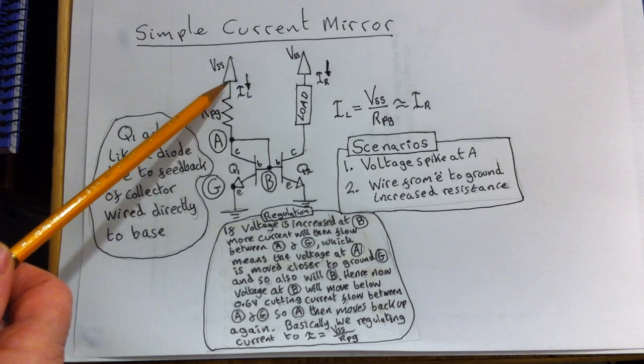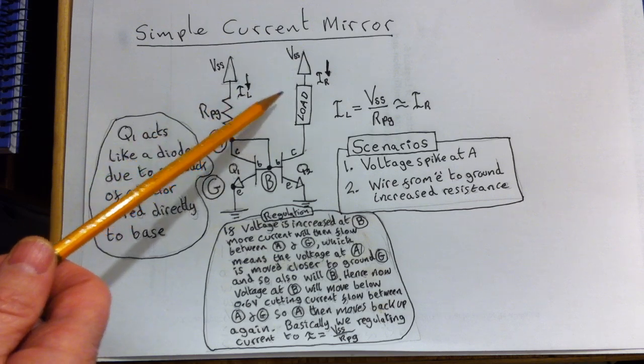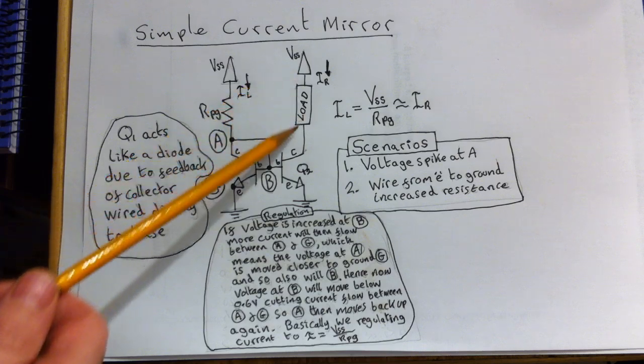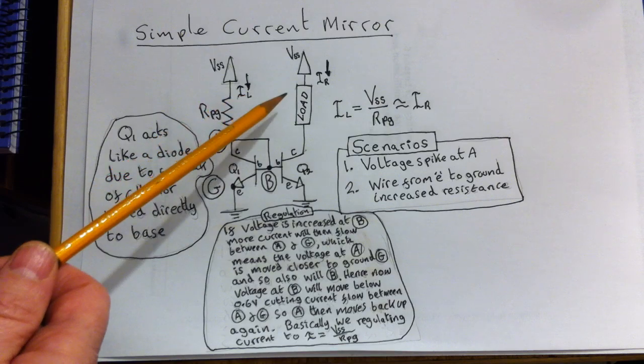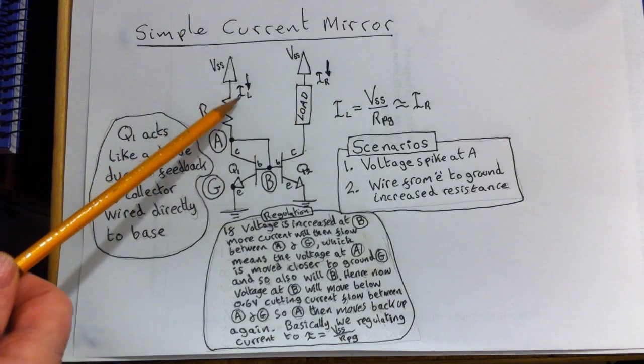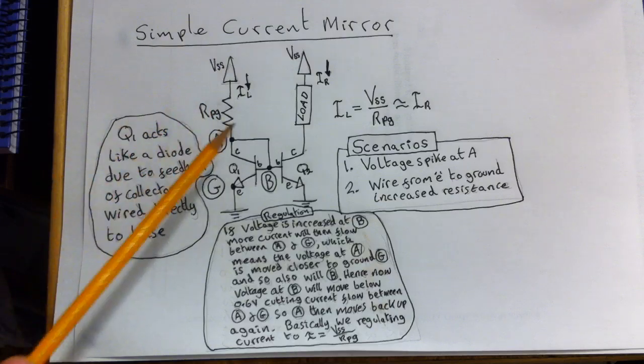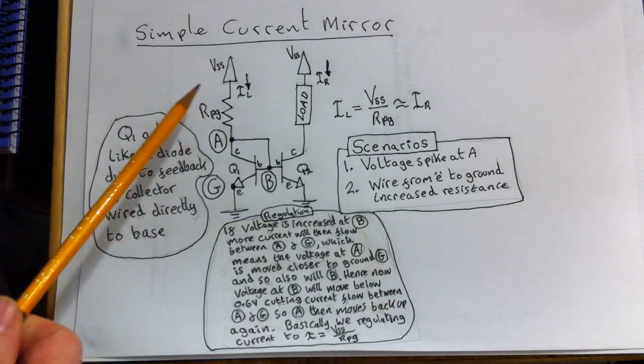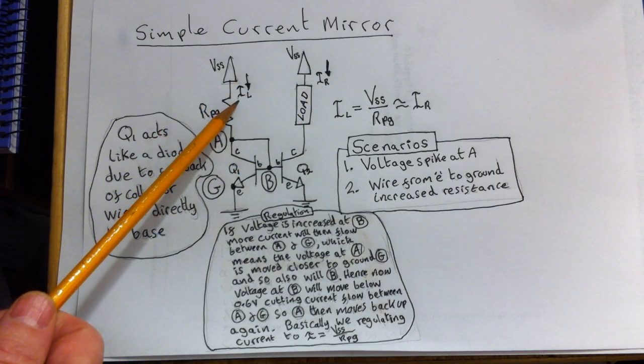Whatever the current is here, I'll call this left IL, will be replicated across on the right-hand side of this circuit across this load. No matter what this current is, this current will always emulate it. Now, how does it do that? I'll just go through some scenarios and explain how this current IR is always equal to this current IL.